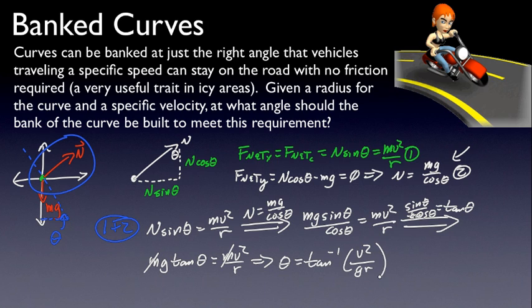As you can see, if I know the velocity, the speed with which I want to go around the curve, g doesn't change near the surface of the earth, and the radius of the curve, I can solve for the angle that that should be banked at.